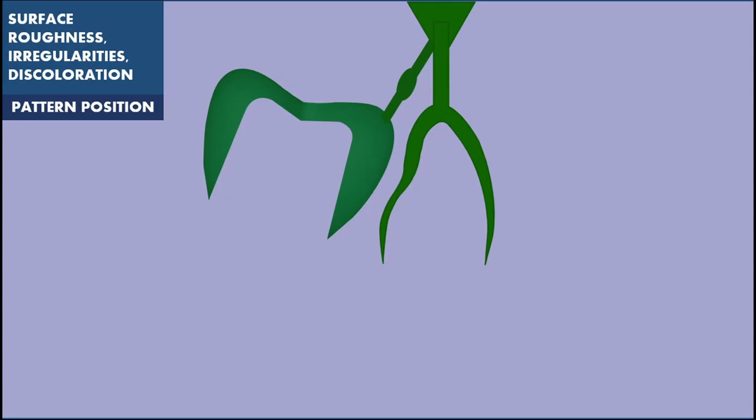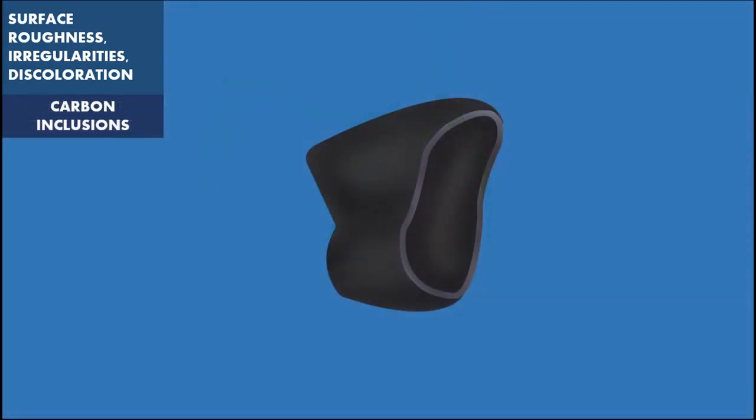Sometimes carbon from a crucible, an improperly adjusted torch or a carbon-containing investment can be absorbed by the alloy during casting. These particles may lead to the formation of carbides or even create visible carbon inclusions. The castings obtained will be dark and they will be very difficult to clean.